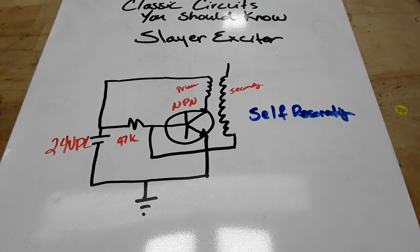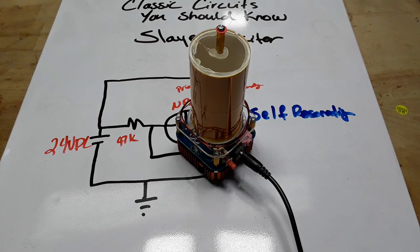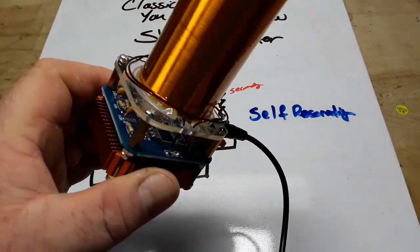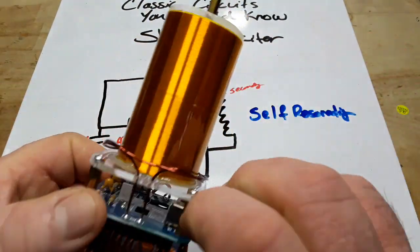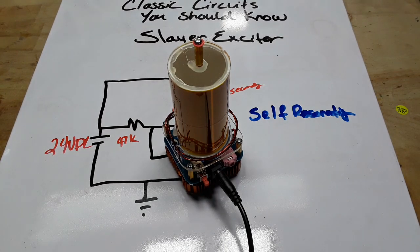So I suppose you want an example of this type of circuit. We can do that. I happen to have one right here. This is a Tesla coil. So let me shut the lights off here and we'll fire it up.